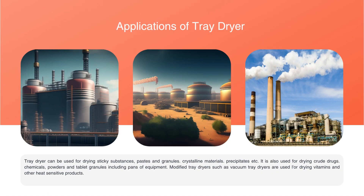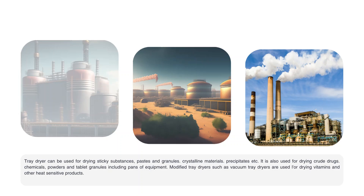A tray dryer can be used for drying sticky material, paste, and granular materials. One of its main applications is in pharmaceutical sectors, where it is used to dry crude drugs, powders, and tablet granules. Some modified versions include the vacuum tray dryer, which is used to dry vitamins and other heat-sensitive materials. The tray dryer has wide applicability in the industrial zone.